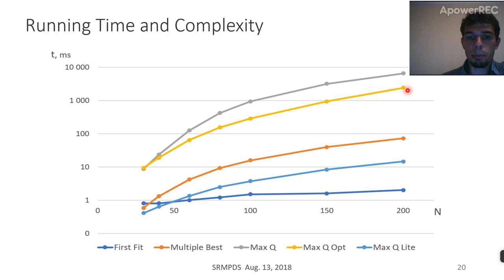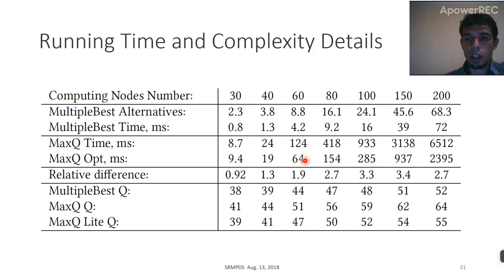We can see that general case algorithms MaxQ and MaxQopt have dramatically larger running time compared to other algorithms, especially first-fit, but perhaps not so dramatically larger compared to multiple-best. Our heuristic to minimize complexity for MaxQopt clearly works, and we can see a roughly threefold advantage for MaxQopt compared to MaxQ.